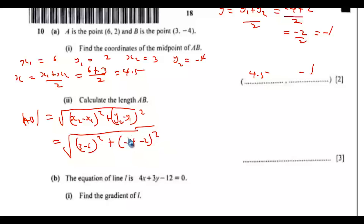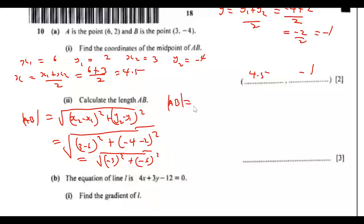You can simplify further or input into your calculator. This gives square root of negative 3 squared plus negative 6 squared, which equals square root of 9 add 36, so square root of 45.